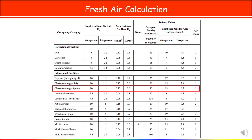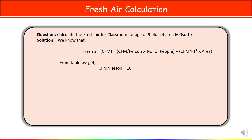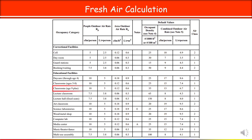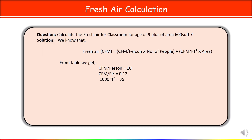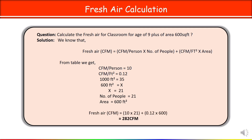Substituting the values: CFM per person is 10 from the table, CFM per square feet is 0.12. For number of people: for 1000 square feet we consider 35 people, so for 600 square feet, by cross multiplication you get 21 people. Area is 600 square feet. Substituting into the formula, you get 282 CFM — this is your fresh air requirement.